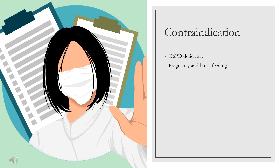Contraindication. Glibenclamide may not be recommended in those with G6PD deficiency, as it may cause acute hemolysis. Regarding pregnancy and breastfeeding, it is generally not recommended during pregnancy, but can be used during breastfeeding.